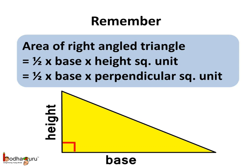So remember children, what is the area of a right angle triangle? The area of a right triangle is half multiplied by base multiplied by height square unit, or we can say it is equal to half multiplied by base multiplied by the perpendicular square unit.